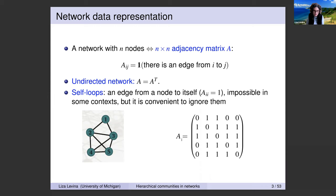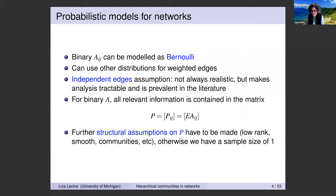As statisticians, if we're going to analyze network data, we have to think of them as a result of some random process. If we're going to think of a random process, we need a probabilistic model. These are binary entries, so they're typically modeled as Bernoulli variables. Most of the work in this area, still the majority, makes the assumption of independent edges. It's not always realistic—maybe rarely realistic—but it makes the analysis much more tractable and gives useful results in practice.